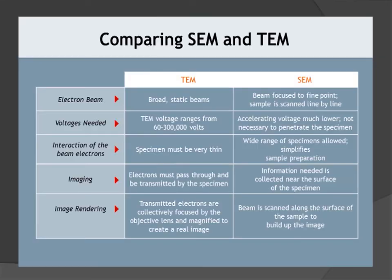Comparing SEM and TEM: the electron beam in a transmission electron microscope is broad and static, whereas in the SEM the beam is focused to a fine point and the sample is scanned line by line. Voltages for a TEM range from 60 to 300 kV, while the SEM uses a much lower accelerating voltage as it is not necessary to penetrate the specimen. TEM specimens must be very thin; the SEM allows a wide range of specimens with simplified sample preparation.